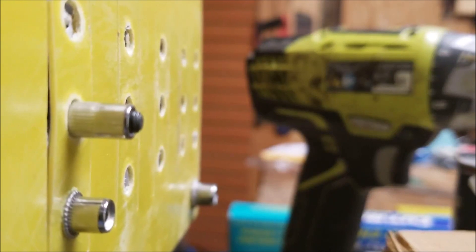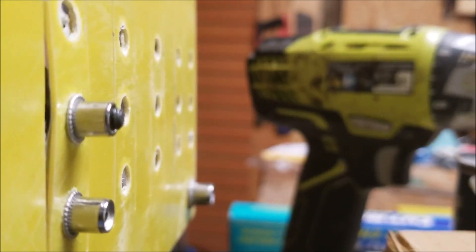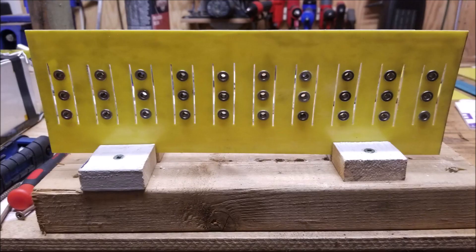The main reason I went with rivnuts is that I needed a captured nut. You could use regular nuts and bolts, but there's a high risk of shorting the battery terminals together while trying to hold the nut on the back side of the circuit board. Here's the finished product with the rivnuts installed.